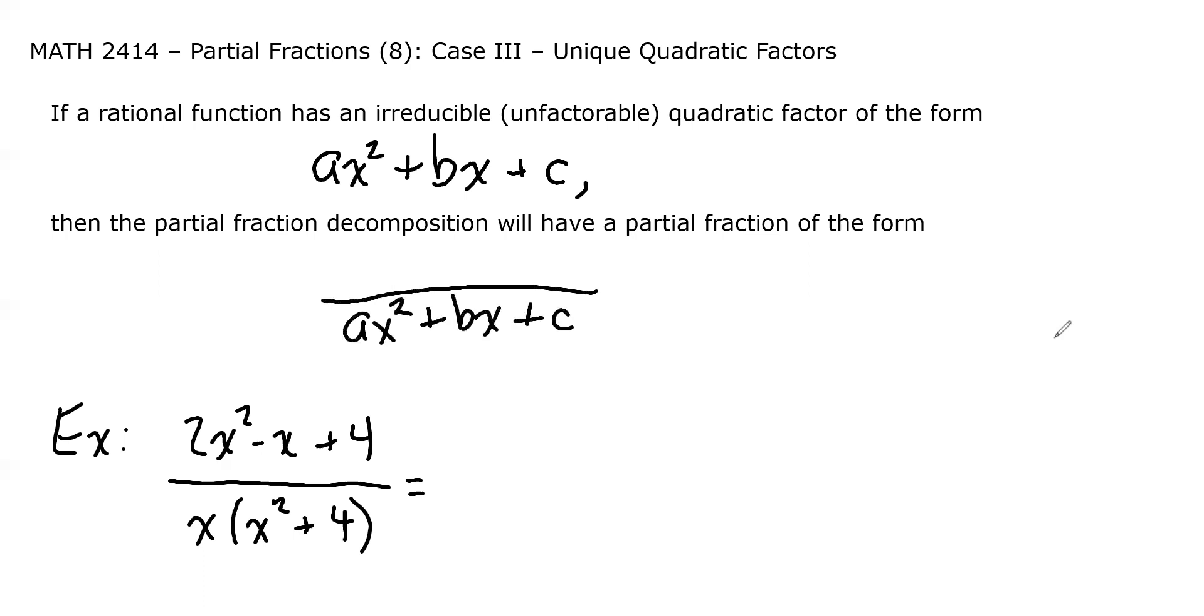But this time, the numerator, instead of being a constant, will be a linear numerator. So something of the form capital Ax + B. So it won't just be a constant. It could have a constant, or it could have an x term, or it can have both.